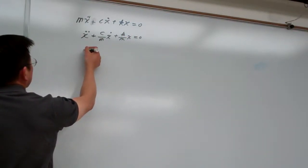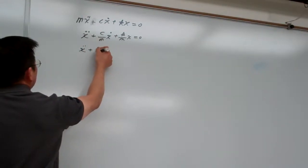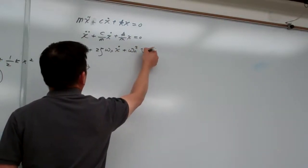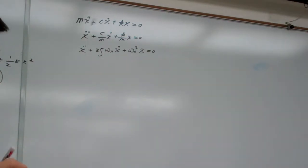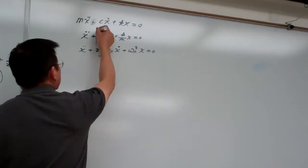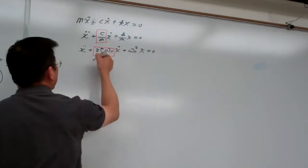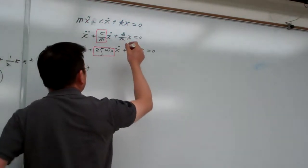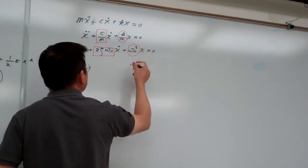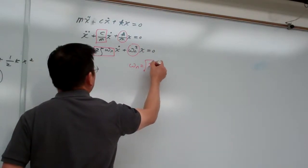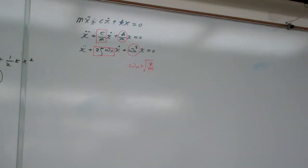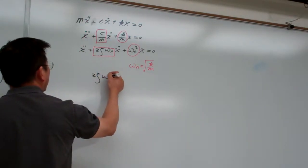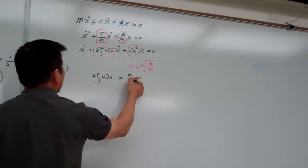This form is written in a particular standard way. Comparing term by term, we introduce a template. These terms equal to these, and we have seen that omega_n equals sqrt(k/m) from the previous sections for undamped systems.